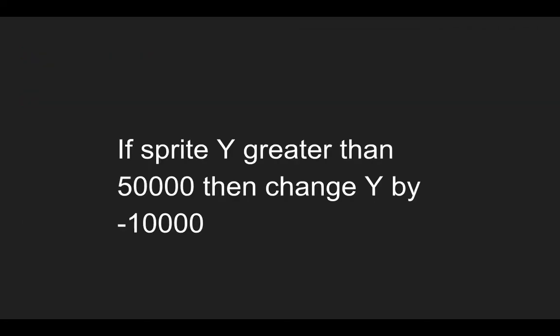If I were to go ahead and rewrite this using those vocabulary words, it would be something like this. Sprite is just a common word used for an object or a variable or a thing. So: if sprite y is greater than 50,000, then change y by minus 10,000. Notice that I used the y variable because, in math, y is up and down on a coordinate plane, and x is the left and right horizontal axis.